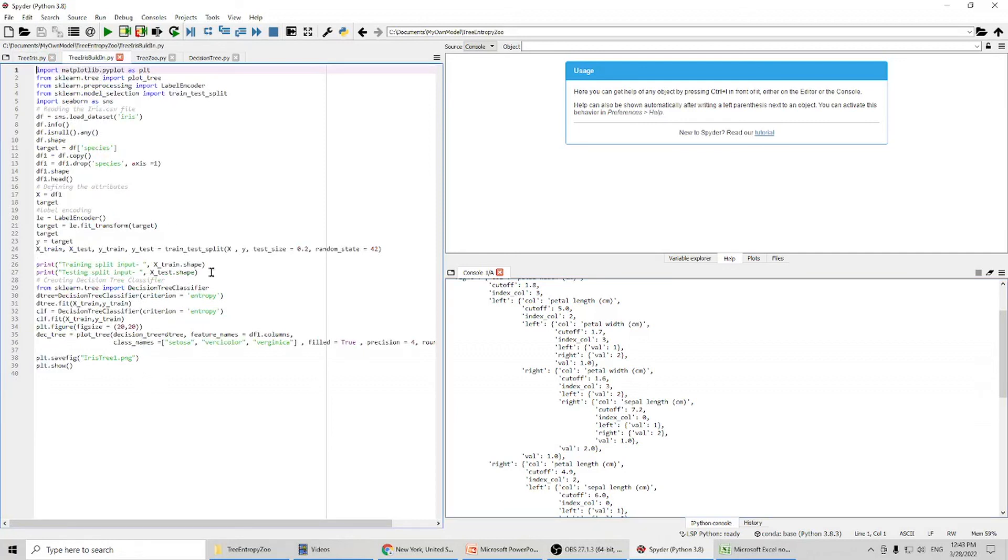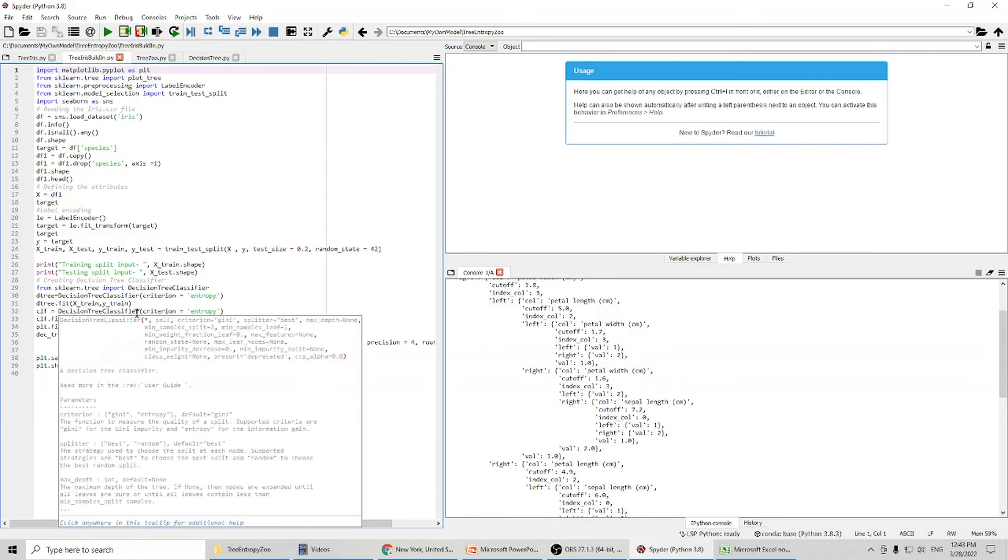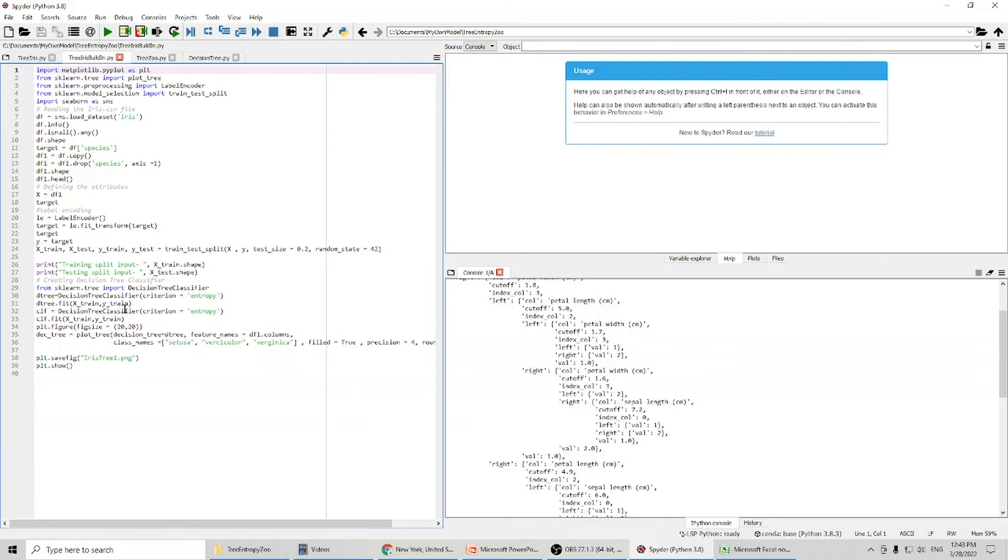Basically, this is doing the same thing as we just did, but it called this built-in function in Python. And then we can display our result. Now let's run the program.